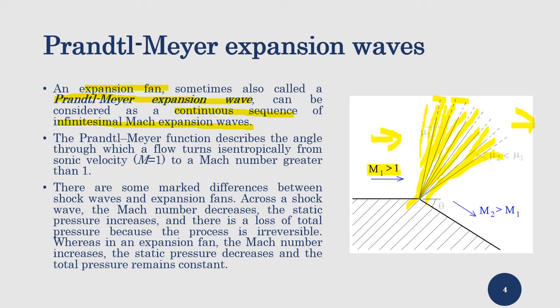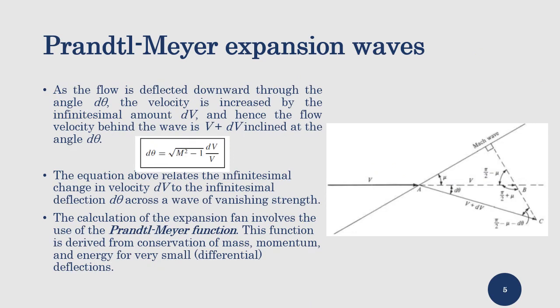In comparison to an oblique shockwave — where we have a concave angle and the Mach number decreases — in the expansion wave we have a higher Mach number downstream. For an oblique shock the process is not isentropic: we have an increase in static pressure and a loss in total pressure, so P02 is smaller than P01. But in an expansion wave the process is isentropic: the Mach number increases across the wave, static pressure decreases, and total pressure remains constant.